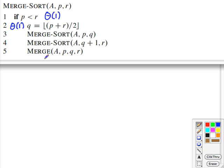The analysis we just did shows that merge takes theta of n, and again, n is expressed by setting p equals 1 and r equals n on the first call. So that will be theta of n to merge.